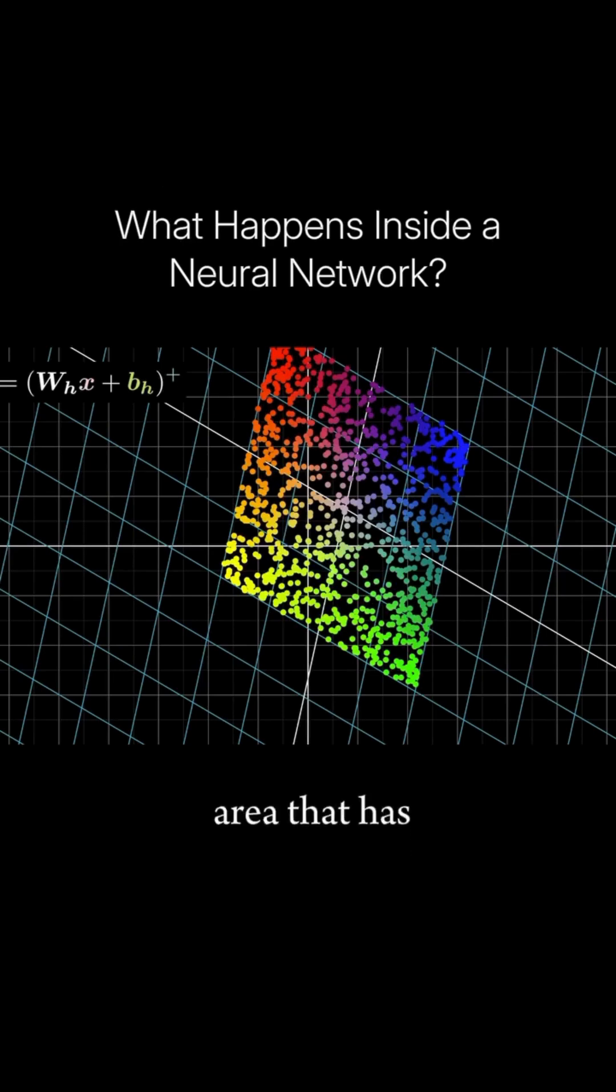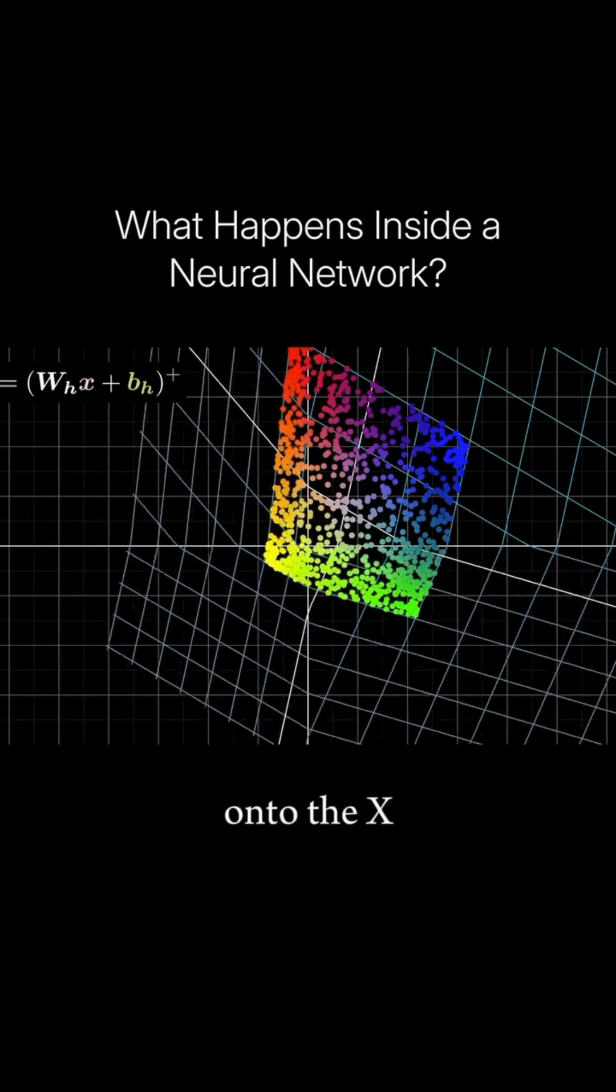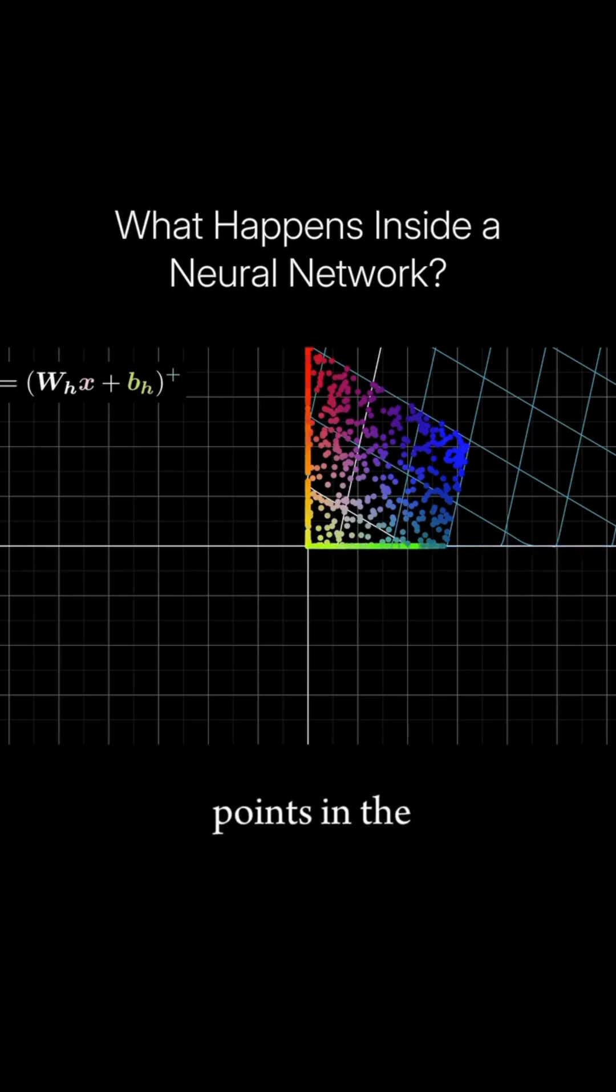Well, the only area that has only positive inputs is the first quadrant. So applying ReLU folds any input from the other quadrants onto the x and y axes, leaving us with this chunk of points in the top right.